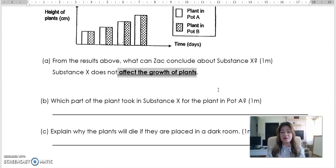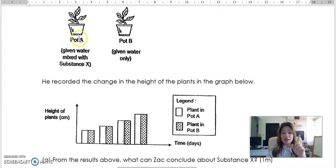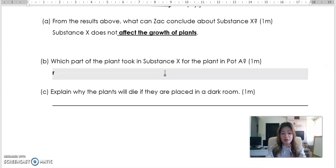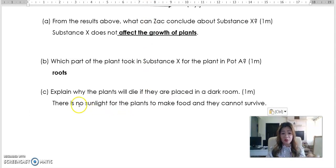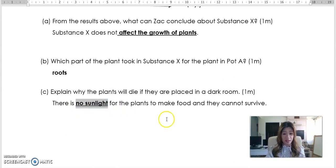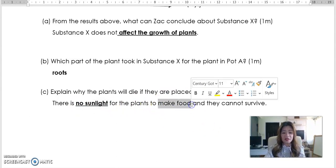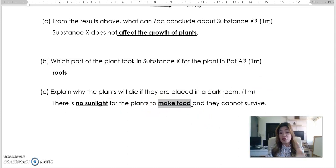Which part of the plant took in substance X for the plant in pot A? Which part of the plant? So this one is substance X is given water mixed with substance X or water. Which part of the plant absorbs water? The roots. That's all. So explain why the plants will die if they are placed in a dark room. So this one has nothing to do with substance X anymore. This is your prior knowledge. There is no sunlight in the dark room. If there's no sunlight in the dark room, there will be no food that's made for the plant. Therefore, it cannot survive. So these are the keywords. Dark room, no sunlight. When there's no sunlight, no food. Therefore, they cannot survive. So that's the keyword. The food is the keyword. The no sunlight is the keyword.